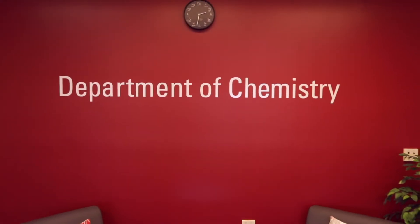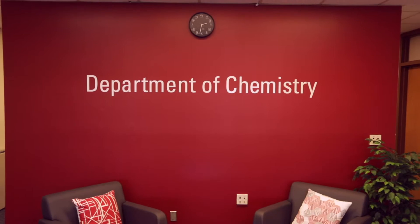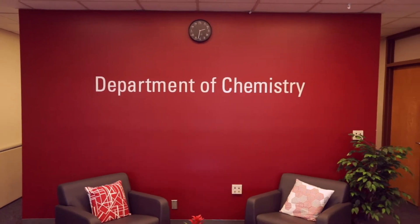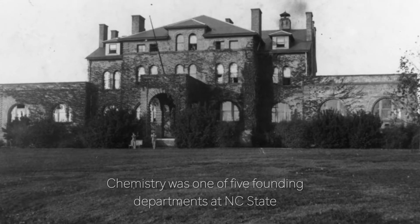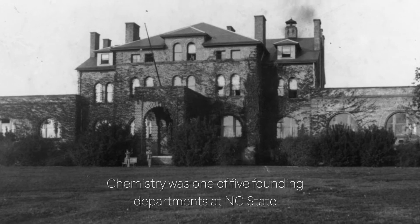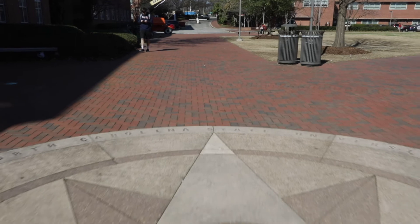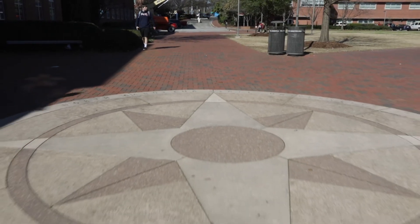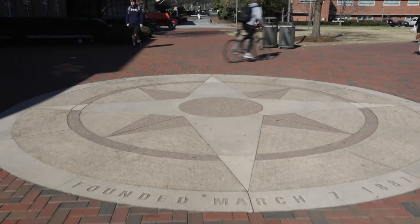The chemistry department at NC State University began in 1889 and the original Holiday Hall was just five rooms. In the 1930s the chemistry department was transferred from agriculture to the School of Science and Business where it operated for more than 10 years until the consolidated University of North Carolina was founded.